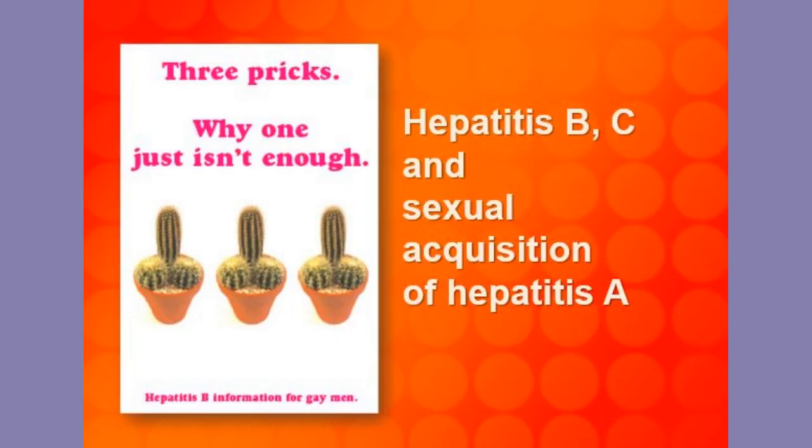There are numerous hepatitis viruses around the world but the main ones in the UK in relation to sex are B and sometimes C through condomless sex, and A from oroanal sex or rimming. There are safe vaccines against both A and B.